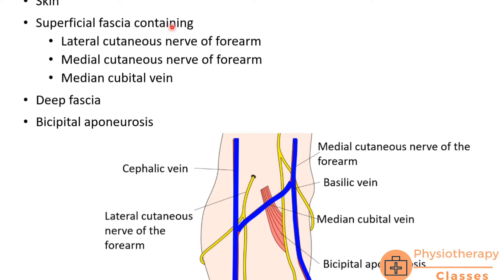The two cutaneous nerves are the medial cutaneous nerve of the forearm — a branch of the medial cord of the brachial plexus — and the lateral cutaneous nerve of the forearm, which is the continuation of the musculocutaneous nerve. The vein found on the roof of the cubital fossa is the median cubital vein, which joins the cephalic vein laterally and the basilic vein medially. Deeper still is deep fascia, and the deepest structure in the roof is the bicipital aponeurosis, the aponeurosis of the biceps muscle.